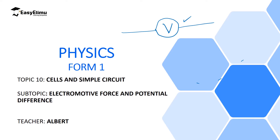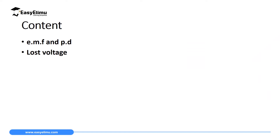In this lesson we're going to discuss electromotive force and potential difference, and we are going to see how different electromotive force is from potential difference. However, they are both measured using the same instrument, which we call a voltmeter. By the end of this lesson I expect you to be able to distinguish between EMF and PD — EMF means electromotive force, and PD means potential difference.